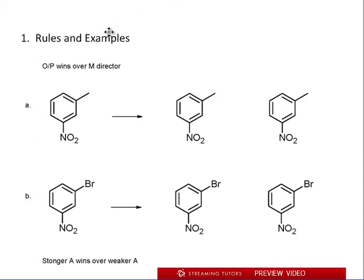So let's get started with the rules. The first rule says that ortho and para win over meta. So when you have an example like this, well, this is an ortho para director, it's an alkyl group, whereas nitro is a meta director. And by the way, I'm going to just assume that you know your ortho para and meta directors. If not, you have to go back to the video where I broke it down and I taught it all to you.